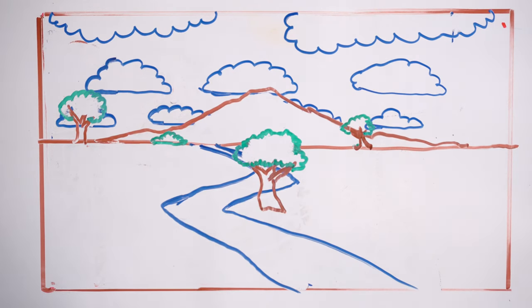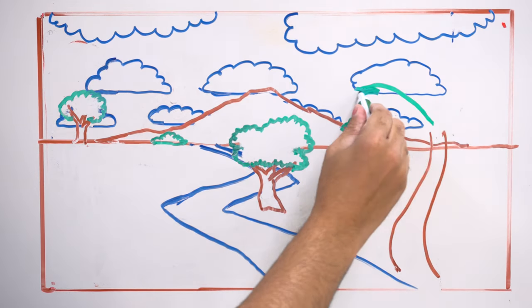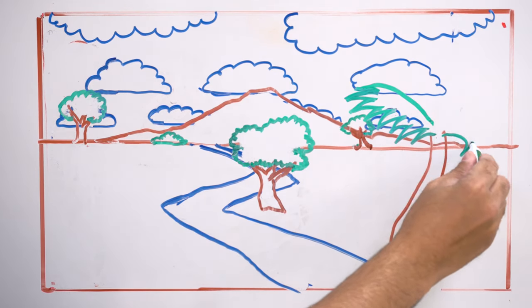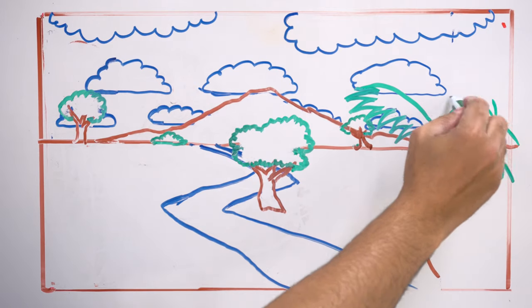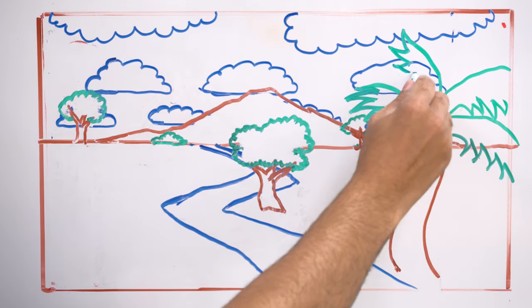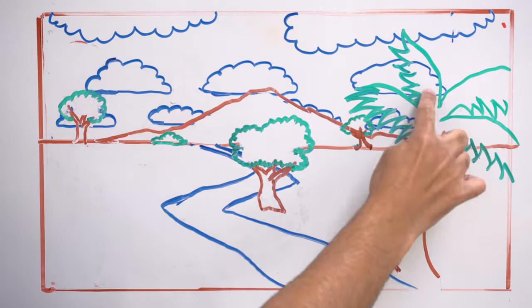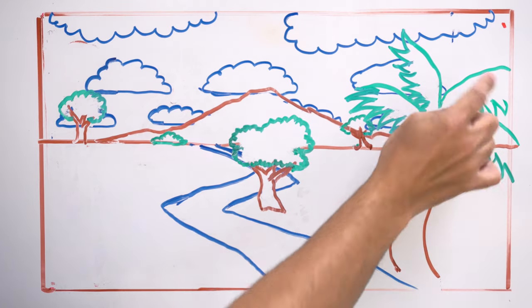Let's make it bigger. Now on the foreground we're gonna do a very big palm tree. So big it overlaps the middle ground and the background and the horizon line as you can see. Let's erase the overlapping.